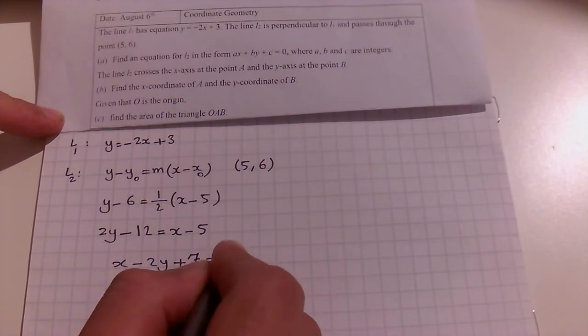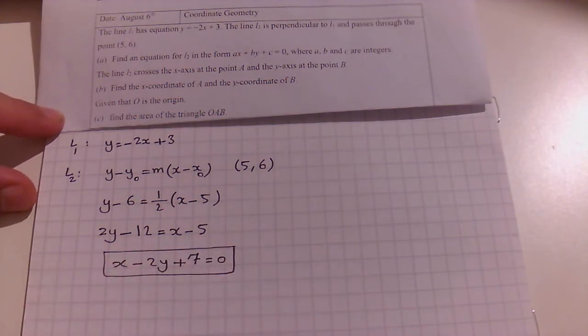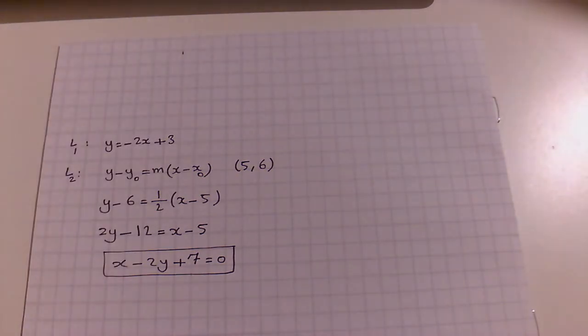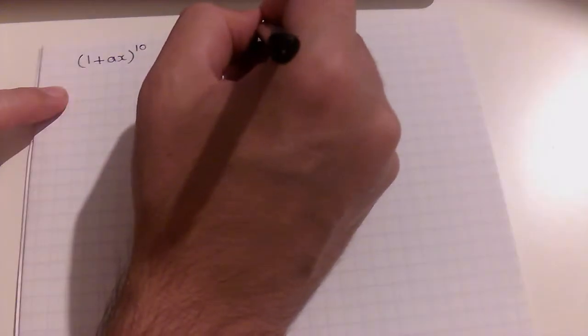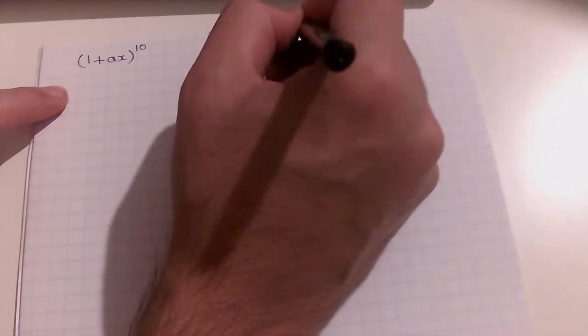Since L1 and L2 are perpendicular, the gradient of L2 is the negative reciprocal of the gradient of L1. The negative reciprocal of minus 2 is one half. So y minus 6 equals one half times x minus 5. Multiplying both sides by 2 gives 2y minus 12 equals x minus 5. Moving everything to one side gives x minus 2y plus 7 equals 0.